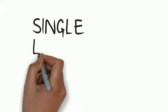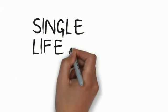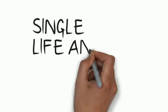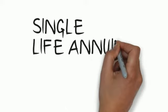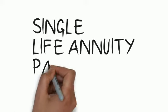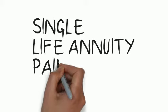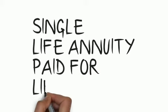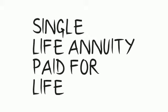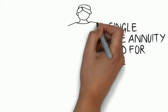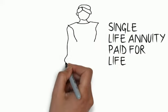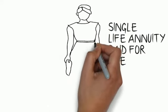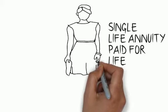The single life annuity is paid to someone for life. We continue to pay for as long as that person is alive — are you alive? We pay. The moment you die, we don't pay. It stops when somebody dies.